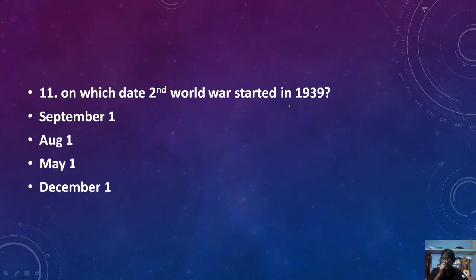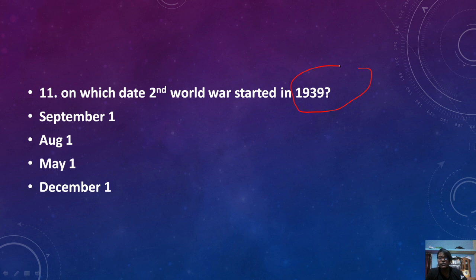On which date did the Second World War start in 1939? The Second World War started on September 1st, 1939.